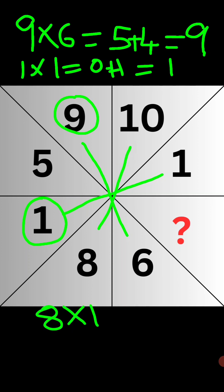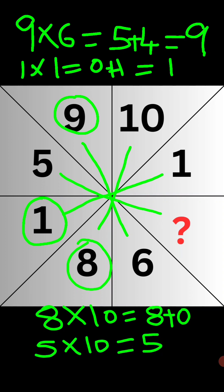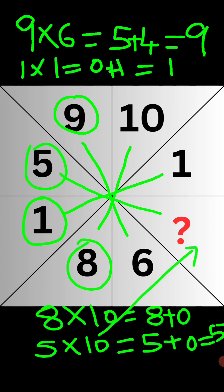8 into 10 is equal to 80. 8 plus 0, so one of the numbers is 8. Similarly, if you look at this 5 and question mark, we will see 5 into 10, which is equal to 50, which equals 5. So 5 is the original number already there, and we have to put the question mark as 10.